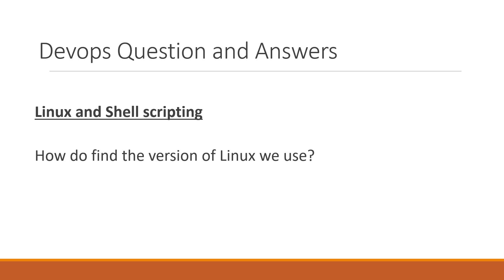How do we find the version of the Linux we use? Generally, we use two types of Linux operating systems. One is Red Hat based operating system. The second one is Debian based operating system.